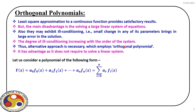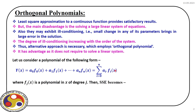Let us first consider a polynomial of the form shown on screen. Last time we used a similar type of polynomial where φ0(x) was 1, φ1(x) was x, and φn(x) was x to the power n. We write the same functional form in a different way: we have a0 times φ0(x), then a1 times φ1(x), and so on. Ultimately it is a summation where we have coefficient aᵢ times function φᵢ(x).